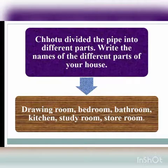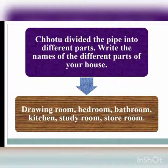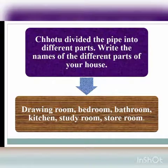Now move on to the exercise in your lesson. Chhotu divided the pipe into different parts. Write the names of the different parts of your house. The different parts of my house are: drawing room, bedroom, bathroom, kitchen, study room, and storeroom.